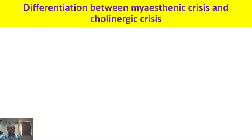To summarize: myasthenic crisis is due to disease progression; cholinergic crisis is due to drug treatment. In myasthenic crisis, you need to give cholinesterase inhibitors to improve muscle contraction. In cholinergic crisis, giving cholinesterase inhibitors worsens the condition. The treatment is exactly opposite in these two conditions, but the symptoms are the same — so differentiation is very, very essential.